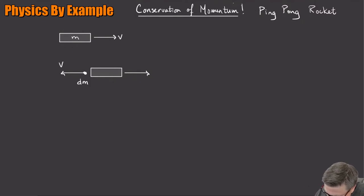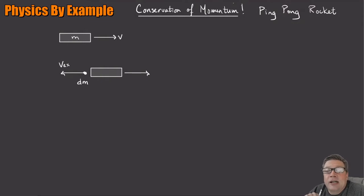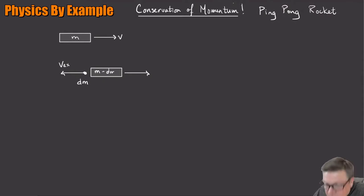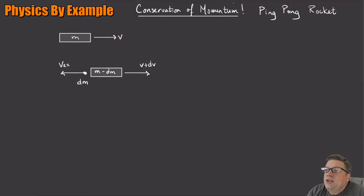This exhaust mass moves with a speed v_exhaust relative to the rocket. The rocket's mass is now m minus dm, and its speed has increased a little bit to v plus dv.